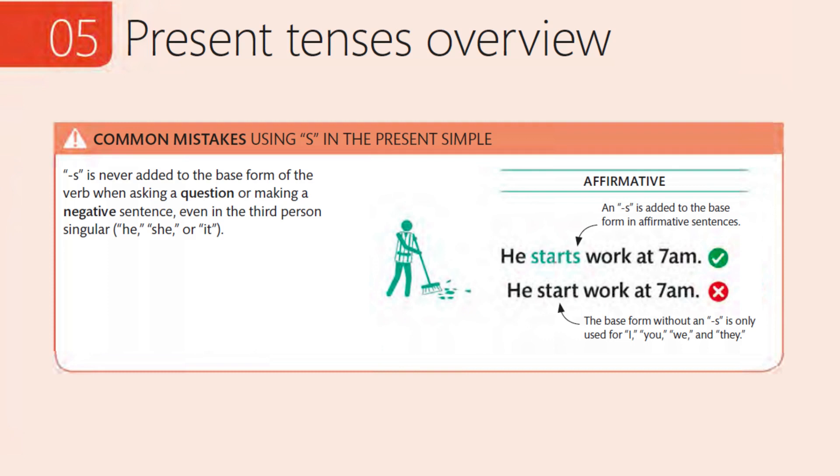He start work at 7 a.m. The base form without an S is only used for I, you, we, and they.